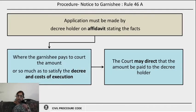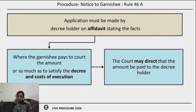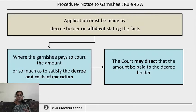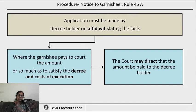Rule 46A further says that an application must be made for this purpose by the decree holder to the court. The application should be made on affidavit stating the facts of the case, the amount of the decree to be paid, and also that the other person is in possession of that property or debt which belongs to the judgment debtor and is liable to pay it to the judgment debtor.